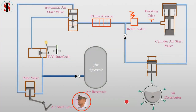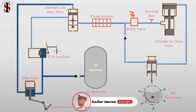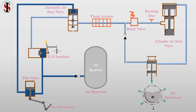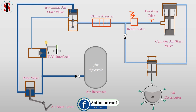Open the main air bottle valve to supply air to the main engine. When the valve is open, all the air passes through the pilot valve and acts on the top of the automatic start valve, providing a positive closing. The other branch supplies air to the turning gear interlock, which prevents the air from going further in the line.